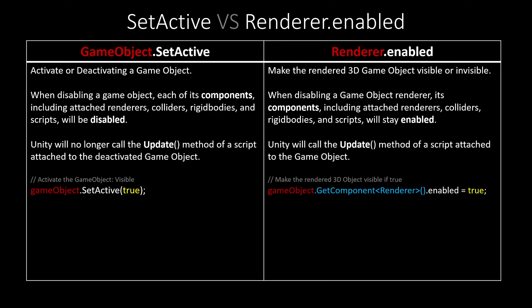To activate a game object and make it visible using setActive, use this code. While on the other side, the renderer.enabled code would be in this form.